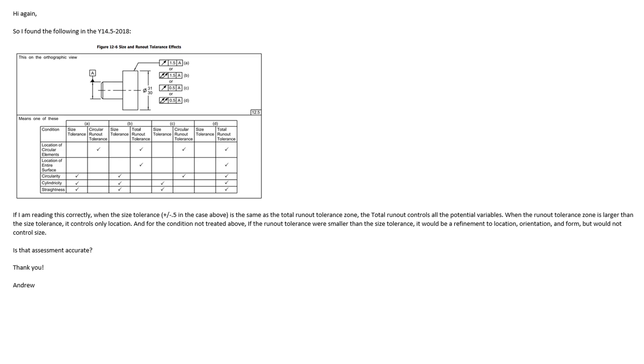Andrew put a figure from the Y14.5 2018, which is a nice new helpful diagram that was added in the 2018 standard, where they talk about the total runout or runout and what is being controlled and kind of what the hierarchy is as you go down. So what he found out was if reading this correctly, when the size tolerance plus or minus 0.5 in the case above is the same as the total runout zone, total runout controls all the potential variables, and that is correct.